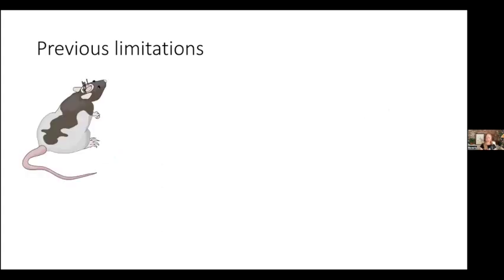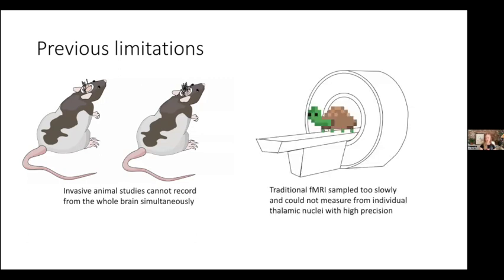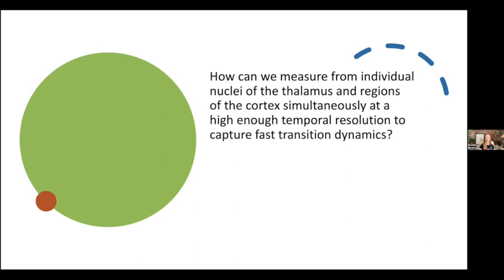Previously this question was hard to answer. While invasive animal studies give interesting clues by demonstrating causal effects of stimulating deep brain regions, it's difficult to record from dozens of regions simultaneously, and it's not possible to invasively record from the whole brain simultaneously. Imaging techniques allow whole-brain recording, but traditional fMRI samples too slowly and can't measure from individual thalamic nuclei with high precision — we run into issues with both spatial and temporal resolution.